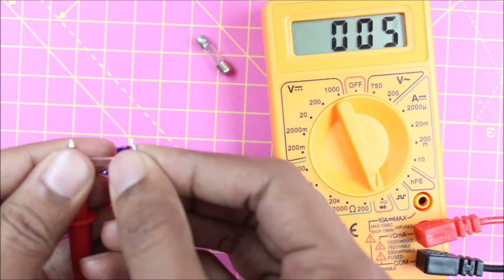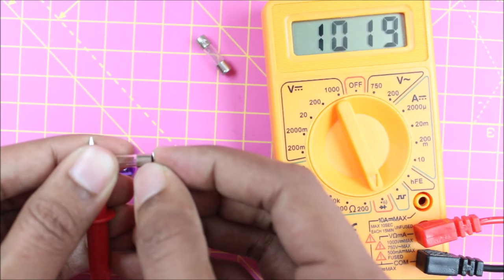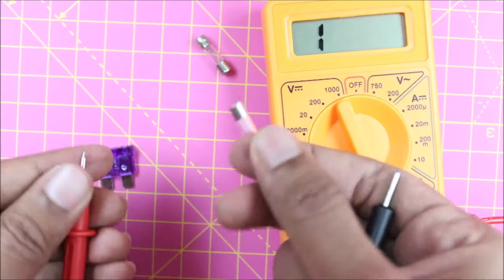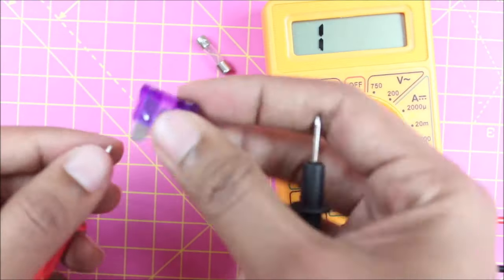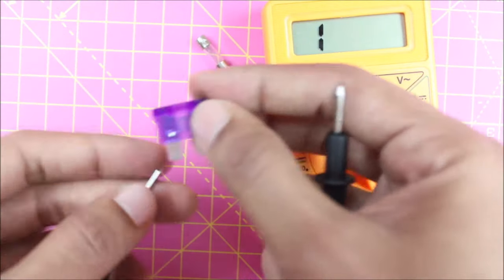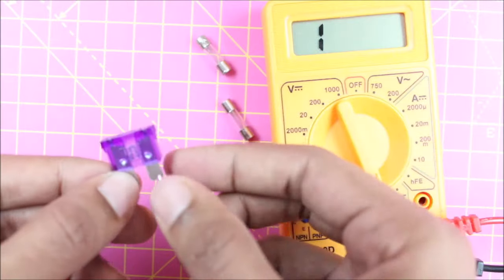As you can see, we hear a beep, so this one is also working. Now if it is an automotive fuse, the conductive pads will be outside, same silver things over here, so just place your probes onto them.